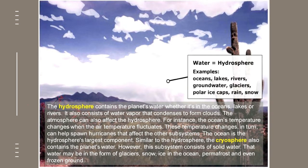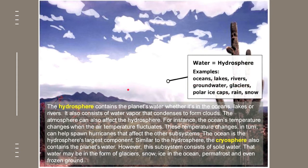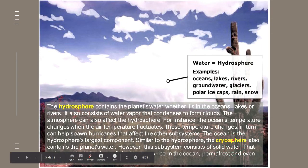The next subsystem is the hydrosphere. This contains the planet's water, whether it is in the oceans, lakes, or rivers. It also contains water vapor that condenses to form clouds, and they have a close interaction with the hydrosphere — for example, ocean temperature changes when the air temperature changes. Examples of your hydrosphere are your oceans, lakes, polar ice caps, rain, and snow. Both fresh and marine waters are included here. Connected to it is the cryosphere — the region of the Earth that consists of solid or frozen water, found in ice caps, ice in the ocean, permafrost, and frozen ground.